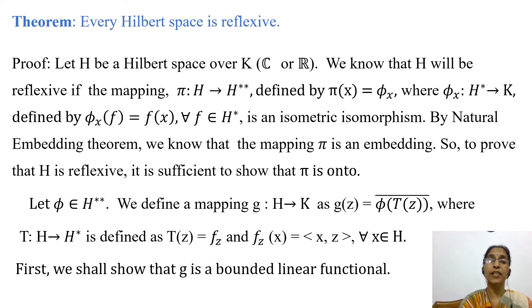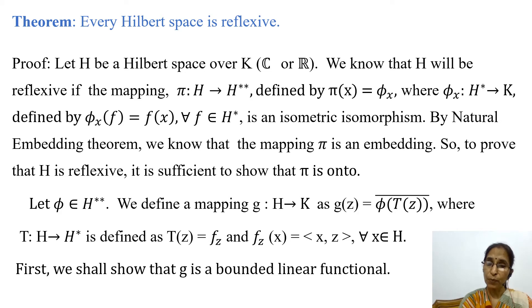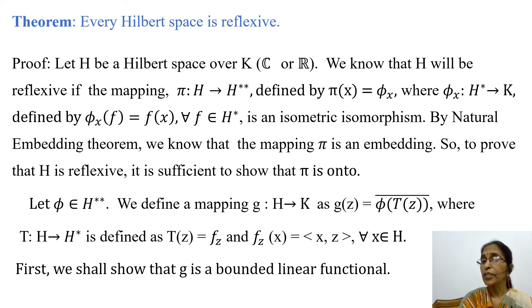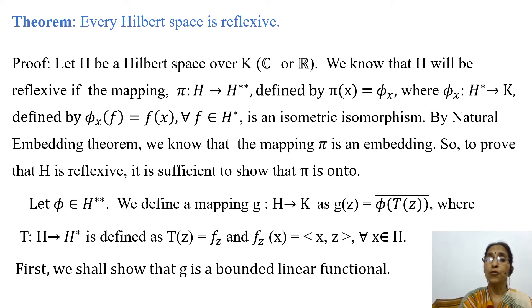The next theorem states that every Hilbert space is reflexive. Let us prove this theorem. Let H be a Hilbert space over field K, where K is the field of complex or real numbers. We know that H is reflexive if the mapping pi from H to H double star, defined by pi of X equals pi_X, is an isometric isomorphism, where pi_X is a bounded linear functional on H star defined by pi_X of F equals F of X for every F in H star. By the natural embedding theorem, pi is an embedding, so it is sufficient to show that pi is onto.